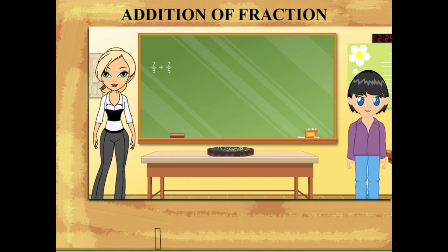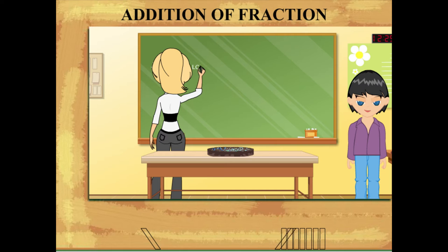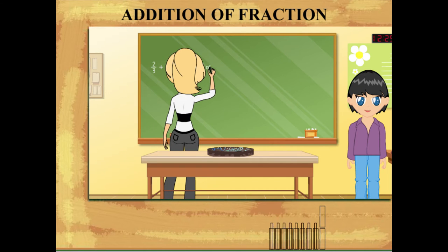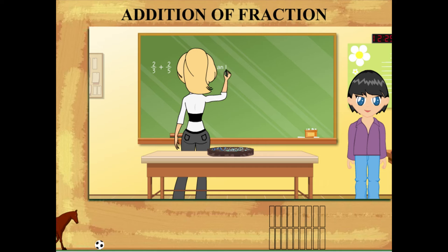Rosie ma'am decides to add the two fractions. Both are unlike fractions. So she calculates the LCM of the denominators 3 and 5. The LCM is 15.